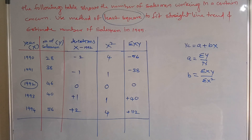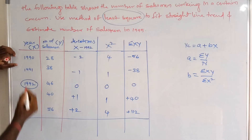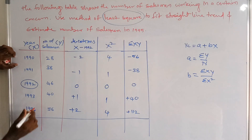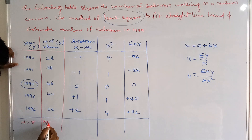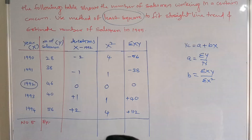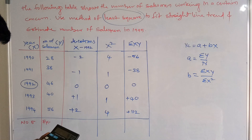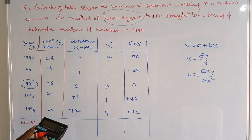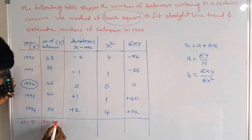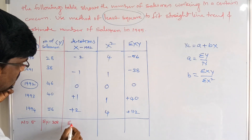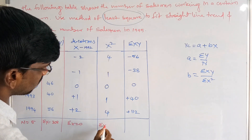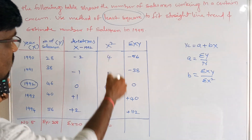Summing all values: n = 5, summation of y = 28 + 38 + 46 + 40 + 56 = 208. Summation of x = 0, and summation of x squared = 4 + 1 + 0 + 1 + 4 = 10.